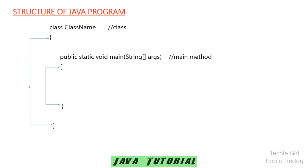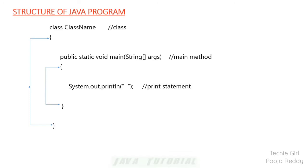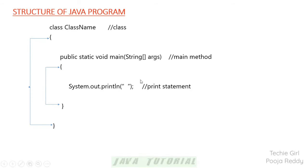Public is an access specifier which specifies the type of access, and the main method should also have its own scope. You are including the class and main method but you are not printing anything. If you want to display output, you need a print statement. In C or Python you have printf or print, but in Java we have System.out.println.